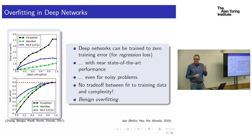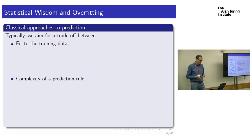We use 'overfitting' to mean bad predictive accuracy, but actually it's just a phenomenon on the training data — and in fact we're getting good predictive accuracy in this case.